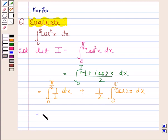Now this is equal to 1 by 2 into x, lower limit is 0 and upper limit is pi by 2, plus 1 by 2 into sin 2x, lower limit is 0 and upper limit is pi by 2.